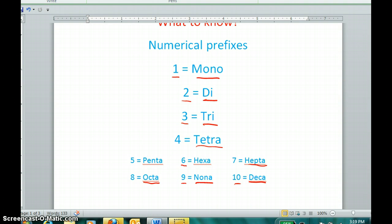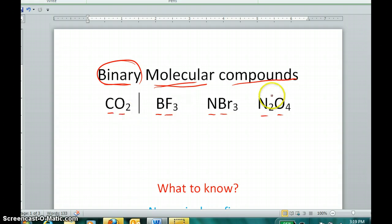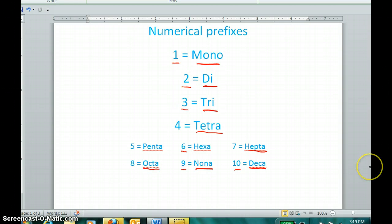So if we know these, we're going to need them when we go to name these binary compounds. Because if we have four of something, we're going to have to say we have four oxygens. We'll use the prefix tetra. If we have three of something, we're going to use the prefix tri. If we have two of something, we're going to use the prefix di. So it's important that we know these prefixes.